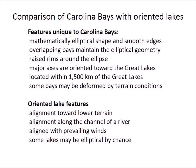LiDAR and satellite images make it clear that the Carolina Bays are different from oriented lakes in other regions of the world. The Carolina Bays have a mathematically elliptical shape with smooth edges; overlapping bays maintain their elliptical geometry, and the bays have raised rims around the ellipses. The major axes of the ellipses are oriented toward the Great Lakes, within 1,500 kilometers — the range of secondary impacts of glacier ice ejected by a meteorite impact on the Laurentide Ice Sheet. In spite of their regularity, some Carolina Bays may be deformed by terrain conditions and erosive processes. The oriented lakes, by contrast, have different types of alignment usually toward lower terrain along fluvial channels or in the direction of prevailing winds, and generally do not have geometrically precise shapes, though some lakes may be elliptical by chance.